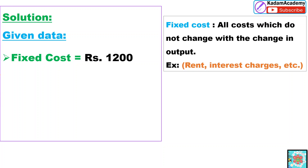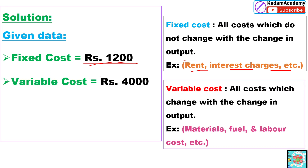Now let's go for the solution. The given data: fixed costs is 1,200 rupees. Fixed costs are all costs which do not change with the change in volume or output, like rent and interest charges. Next, variable cost is 4,000 rupees. Variable cost is the cost which changes with the change in the volume of production — like material, labor — these increase as production increases.